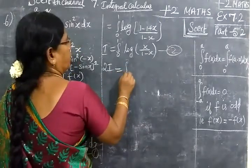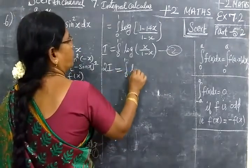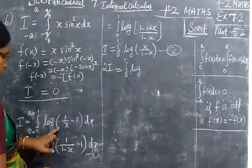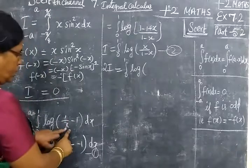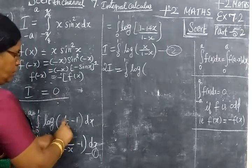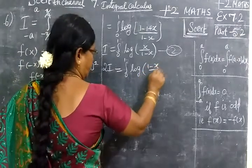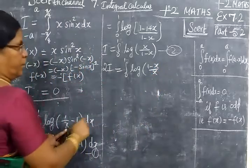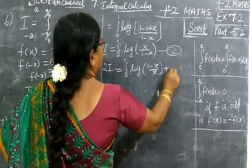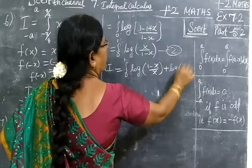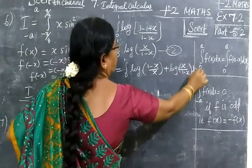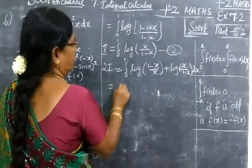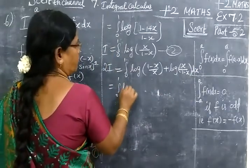So 2i equals integral 0 to 1 log of. First one is 1 minus x. This one, if you take LCM, LCM is 1 minus x, so (1 minus x)/x plus log of x/(1 minus x) dx.